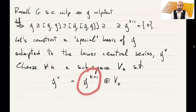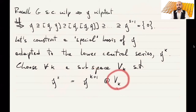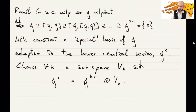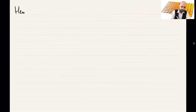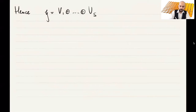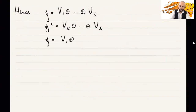What's important is that this space Vₖ is a subset of Gₖ. So what we have is G equal to V₁ ⊕ … ⊕ Vₛ. We can also write it as G = V₁ ⊕ … ⊕ Vₖ₋₁ ⊕ Gₖ. We have this decomposition.